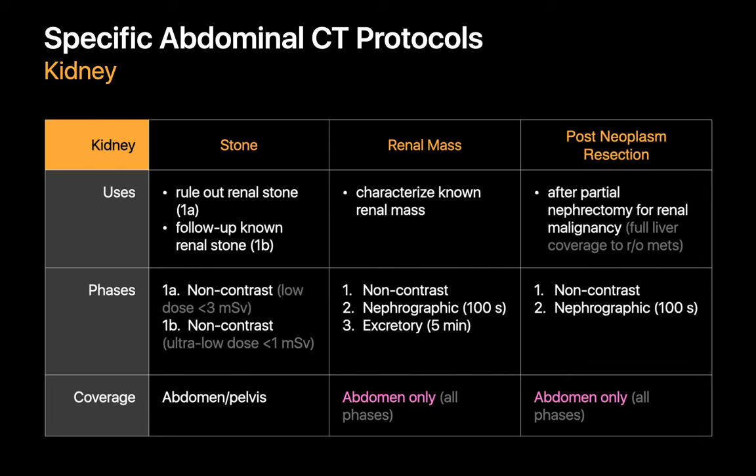Three specific abdominal CT protocols that target the kidney are the STONE protocol, renal mass protocol, and post-renal neoplasm resection protocol. The STONE protocol is a non-contrast CT through the abdomen and pelvis used to either rule out or follow up on a known urinary tract calculus. Scans for ruling out calculi are done using low radiation dose technique, while follow-up scans can be done using ultra-low radiation dose technique. These low-dose techniques permit visualization of a stone, but may be noisy and result in suboptimal assessment of other abdominal organs and tissues.